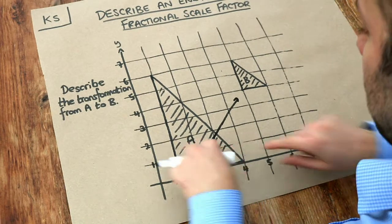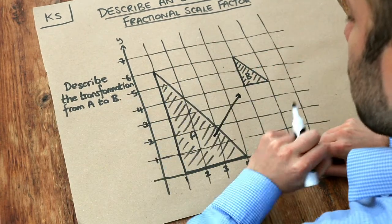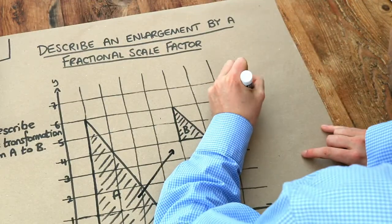Now firstly can you notice that the shape is actually getting smaller from A to B rather than larger? But we use exactly the same principle as we did before. Let's first say it's an enlargement.